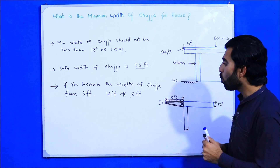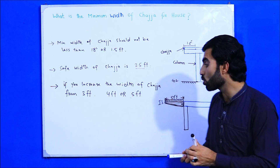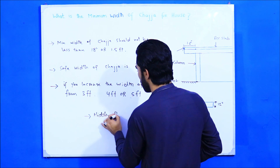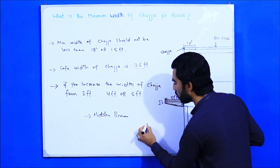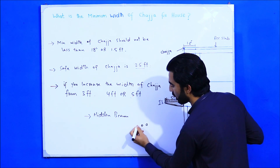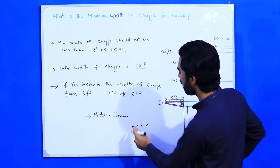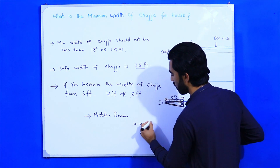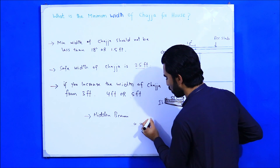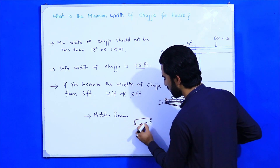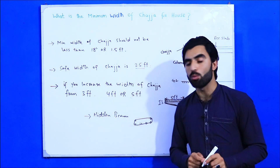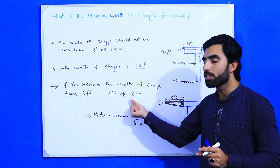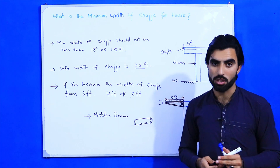To increase the width of chadja, we should also provide a concealed or hidden beam. For the hidden beam, use four bars at the bottom — or more depending on structural design — and two bars at the top. Same as a beam, provide stirrups with spacing of nine inches or six inches, and then you can safely achieve a greater width of chadja.